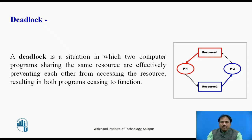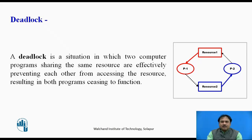Process P1 requires resource 2 for its execution, but it is already held by process P2. Whereas process P2 requires resource 1 for its execution, which is already held by process P1. So P1 and P2 are not able to execute their tasks — they are blocking each other's execution. This condition is called a deadlock, and in the operating system we must take utmost care to avoid such deadlocks, because they halt the entire system.